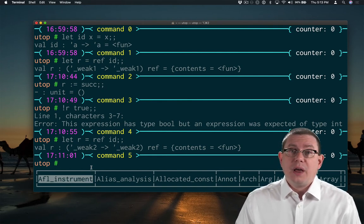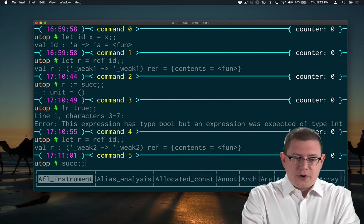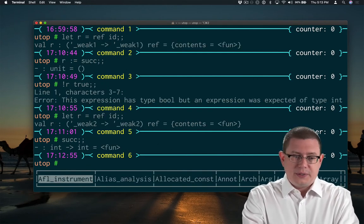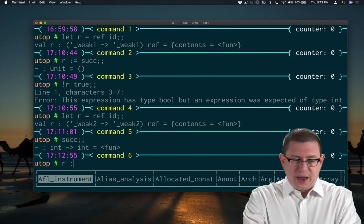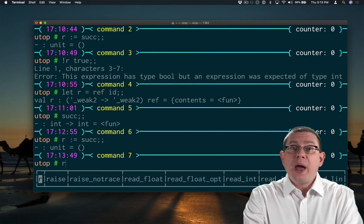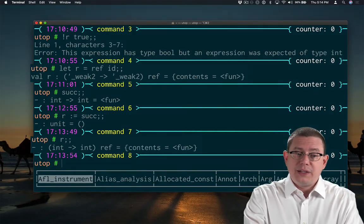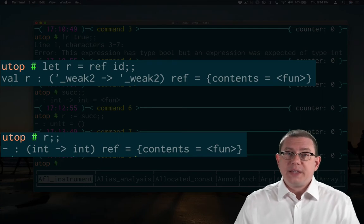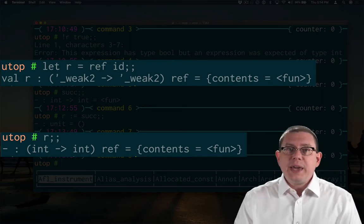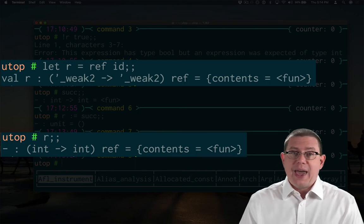But then, later on, I do put such a function in. So I can take the successor function, which is an int arrow int, and I can store it in that reference. It gives me back unit. But look at what happens now to the type of r. It's no longer involving weak type variables. That weak type variable has been permanently instantiated at int.